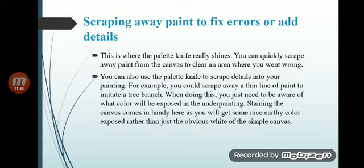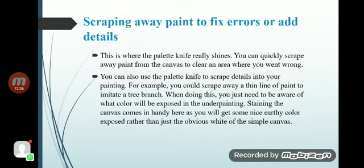The palette knife really shines when scraping. You can quickly scrape away paint from the canvas to clear an area where something went wrong. You can also use the palette knife to scrape detail into your painting — for example, scraping away a thin line of paint to imitate a tree branch. When doing this, you need to be aware of what color will be exposed in the underpainting. Staining the canvas beforehand helps, as you will get an earthy color exposed rather than just the white of the plain canvas.